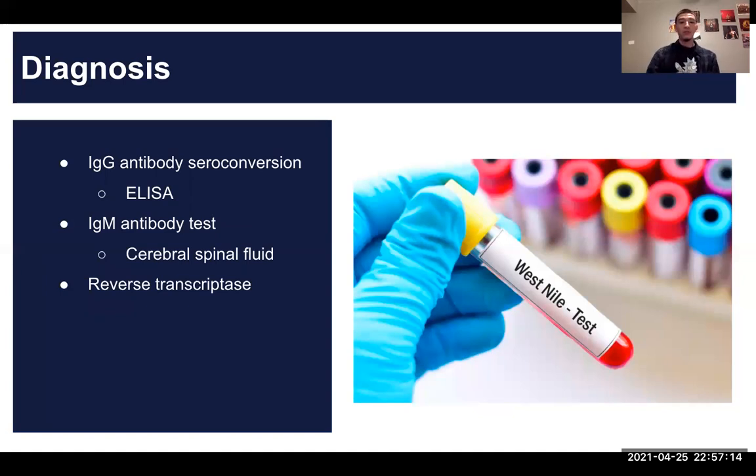The West Nile virus can be diagnosed through numerous tests. The IgG antibody seroconversion can be issued in two specimen collections within one week interval through enzyme-linked immunosorbent assay or ELISA for short. Another test would be an IgM antibody test, which also captures ELISA. IgM antibodies will be detected in most cerebral spinal fluid during a patient's clinical presentation. One test can also be through viral detection by reverse transcriptase polymerase chain reaction assay and virus isolation through cell culture.